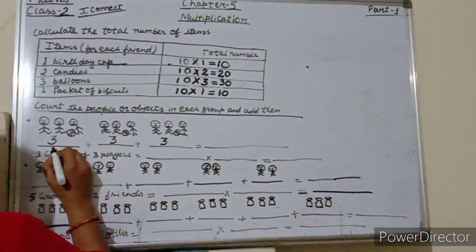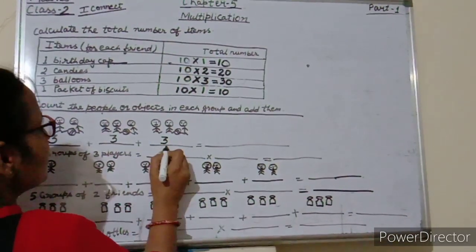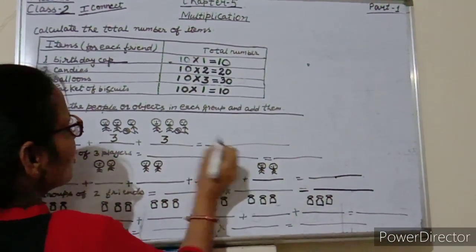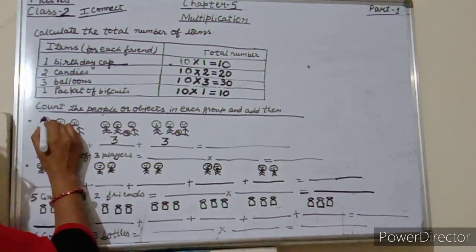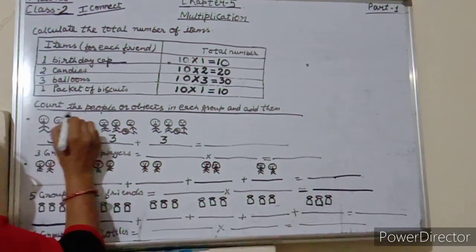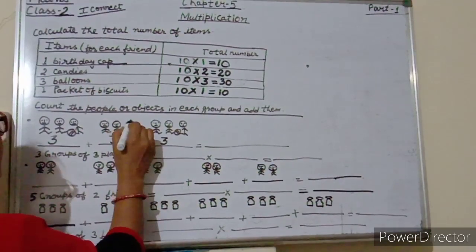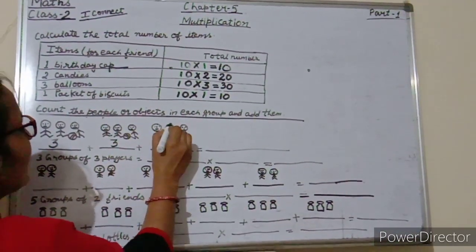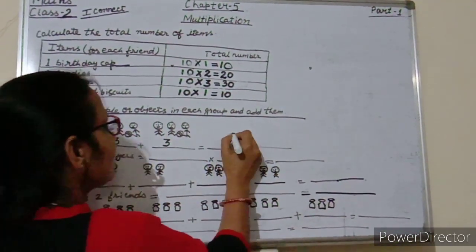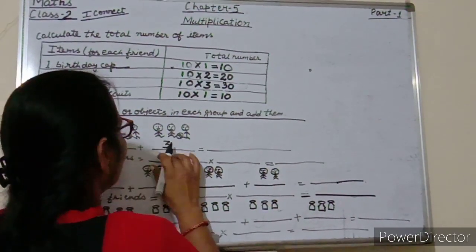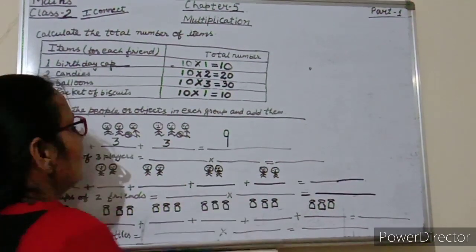So students, 3 plus 3 plus 3 equals — start counting with me: 1, 2, 3, 4, 5, 6, 7, 8, 9. So here we write: 3 plus 3 plus 3 is equals to 9 people.